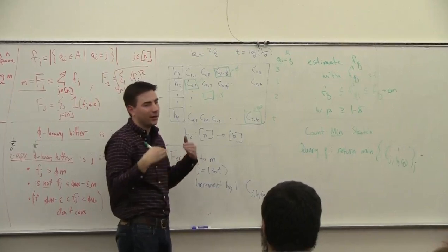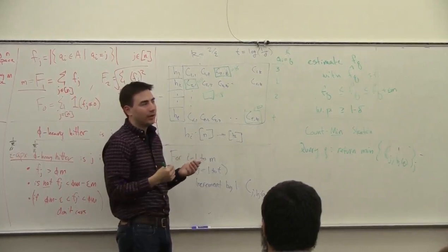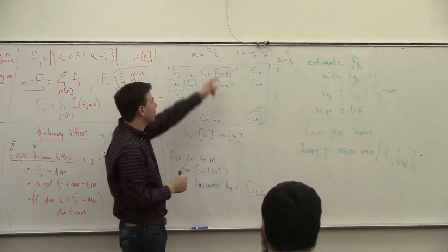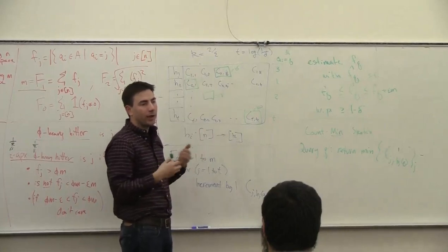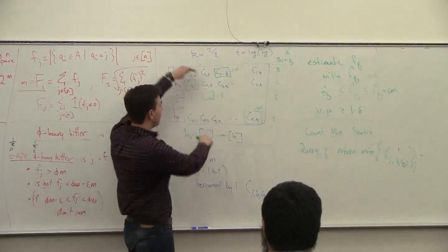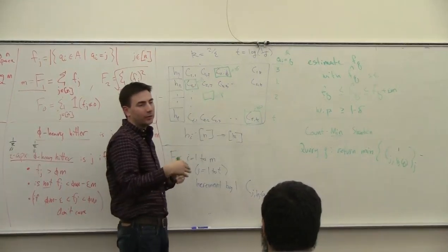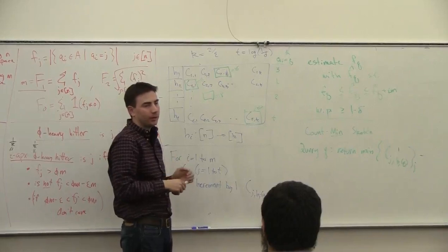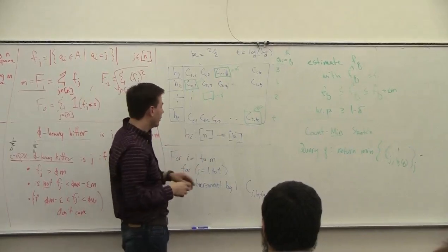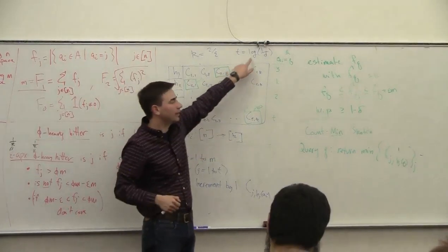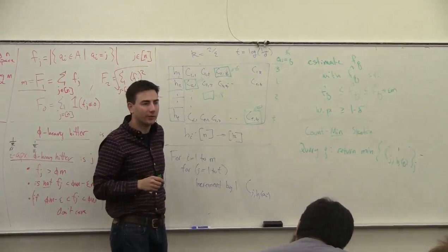And if epsilon is small, then you can use Markov inequality to show that it has no more than epsilon error, epsilon m error total, with probability one half. And then you have log 1 over delta of these, and so you can combine them together to drive error down to any delta if you set t equal to this. So that's kind of the overview of the analysis.